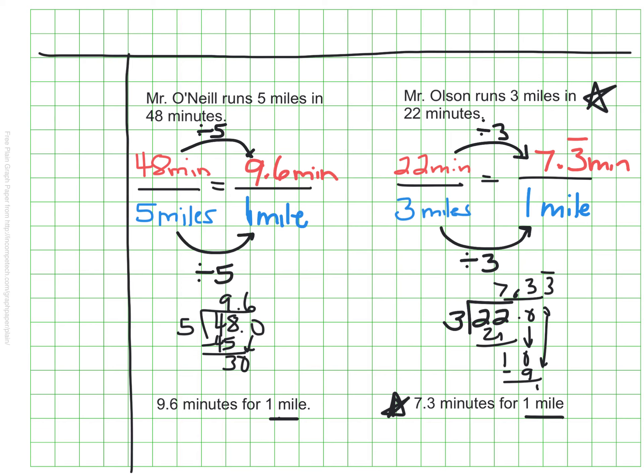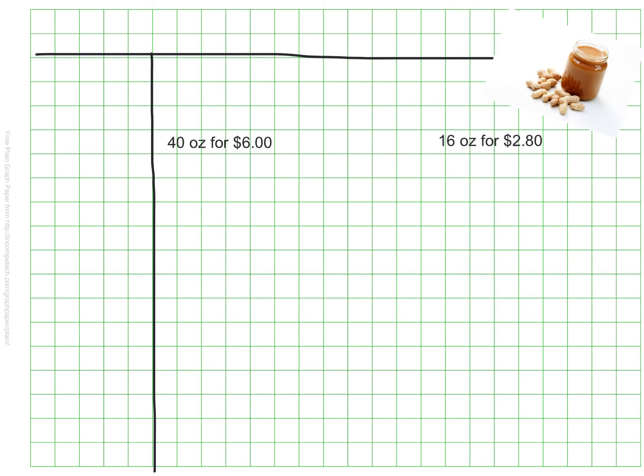Let's try one more example, this time with prices, something that I do often, which is to figure out which is the better deal or the best price. If we want to buy peanut butter, sometimes they sell us the same peanut butter in two different sizes. So we see here that we could buy 40 ounces of peanut butter for $6 or 16 ounces of the same peanut butter for $2.80. Since they are not the same size and they're not the same price, it can be hard to know right away which is the better deal.